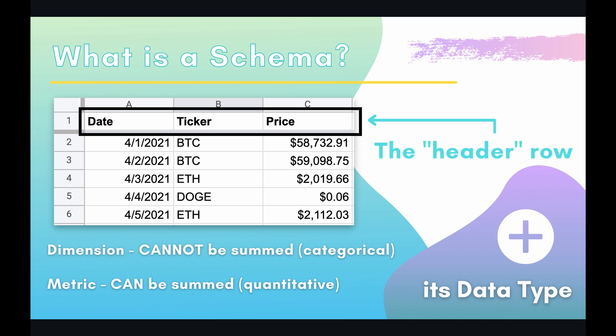With Data Studio, you also have to specify whether each field is a dimension or a metric. The easy way to remember is whether you can perform mathematical operations on its data. If we look at ticker in column B, we would specify this as a dimension because we can't really sum up BTC with ETH or take the average of those two. They cannot be summed — this is a categorical variable, so we are going to label this as a dimension.